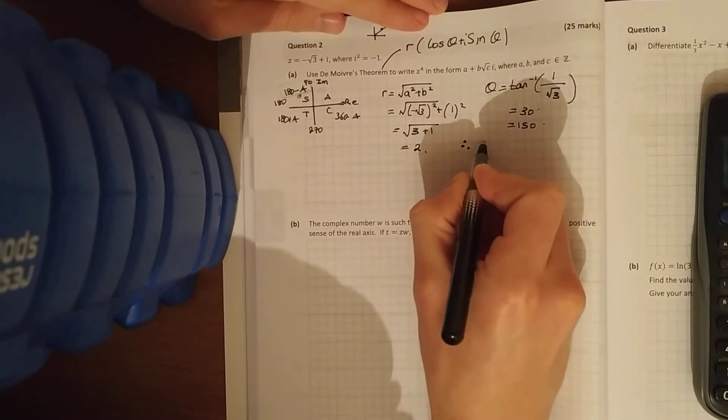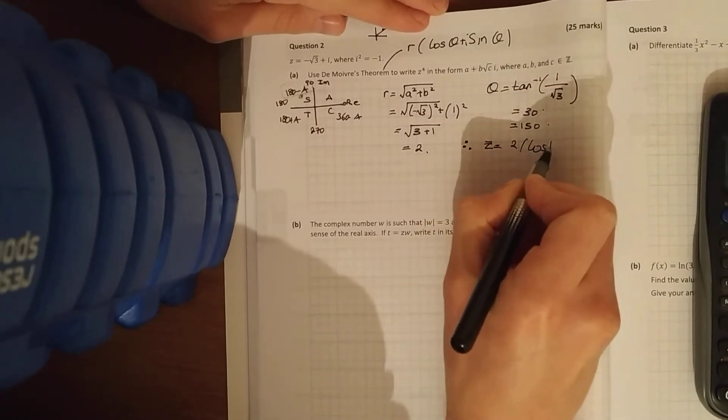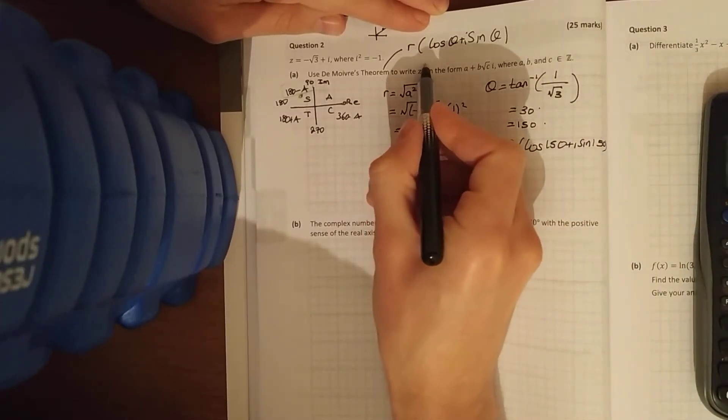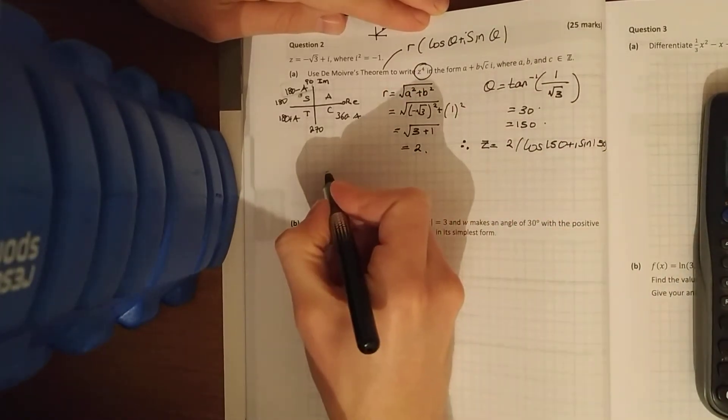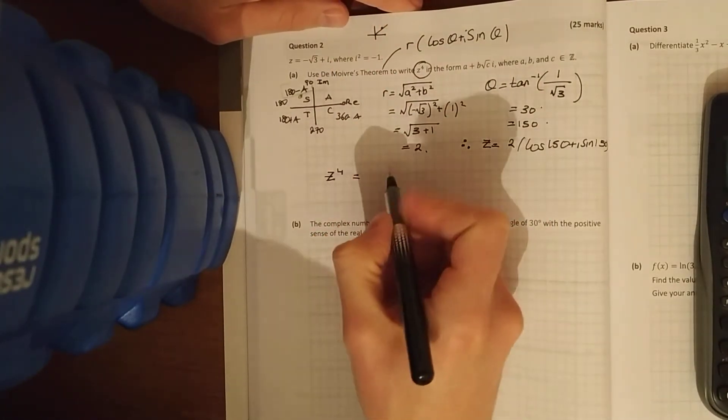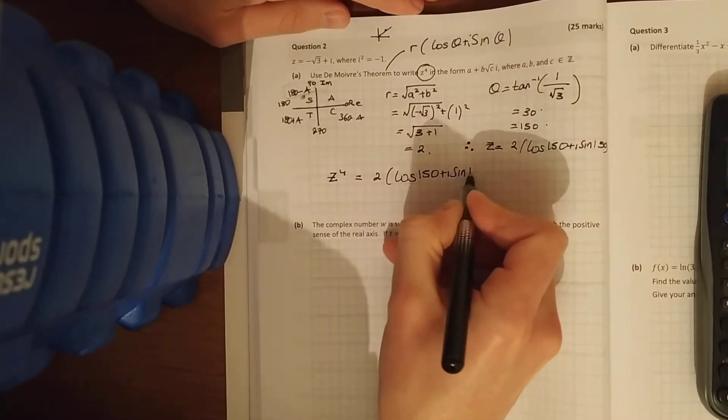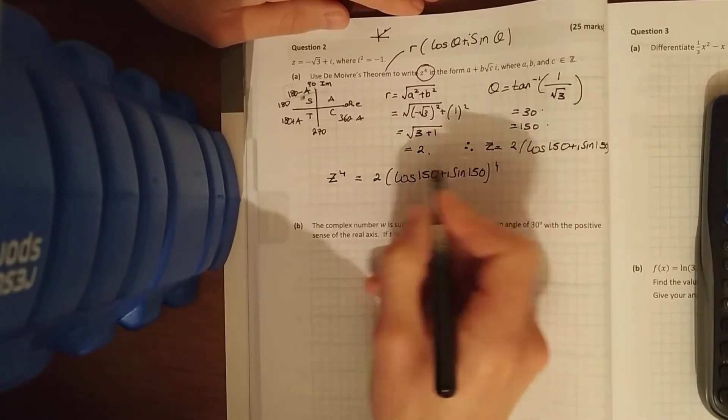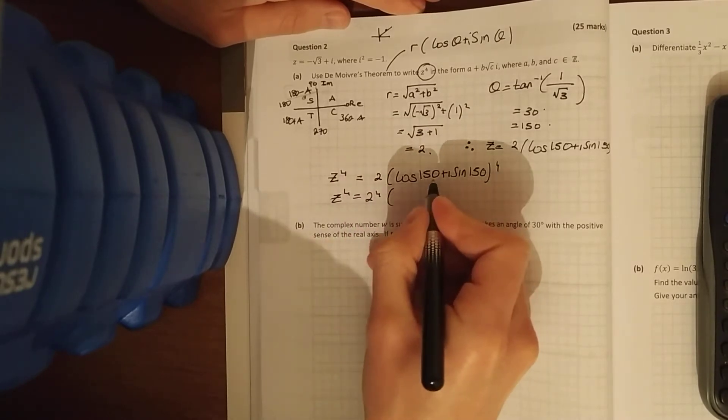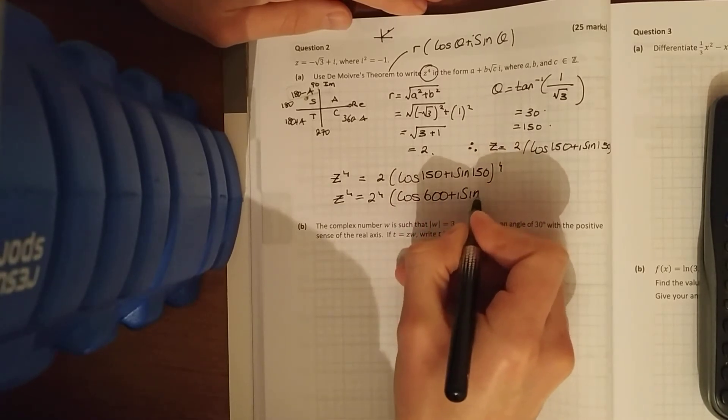Therefore, in polar form, z is equal to 2 cos 150 plus i sine 150. They're not just asking for z, they're asking for z to the power of 4, and this is the beauty of De Moivre, rather than writing this out 4 times and multiplying it, there's a thing you can do with the power. So the power simply goes on to the modulus, and then you multiply the angle, so 4 times 150, just because I'm running out of space, so 600 plus i sine 600.